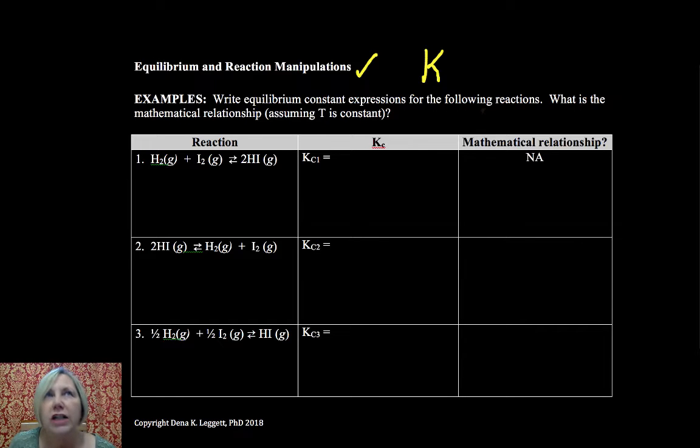It's common to want to take reactions that are known or easier to know and try to use those reactions, combine those reactions in some way to provide information of a different but related reaction. And so we want to see the effect such manipulations have on K. There are three things we're going to do: we are going to reverse a reaction, multiply a reaction by a factor, and add reactions to see the effect on K.